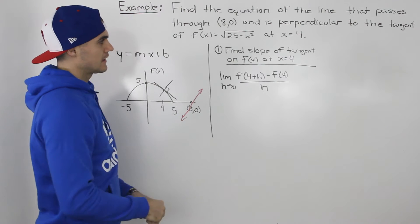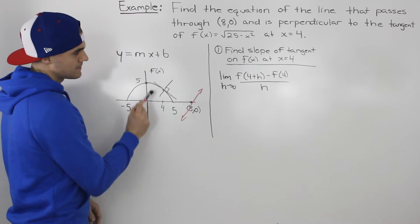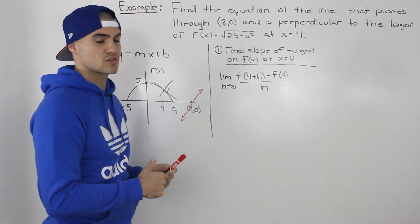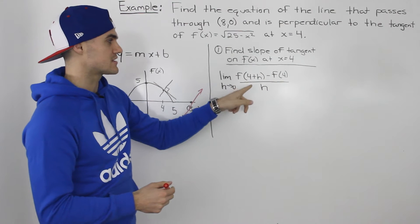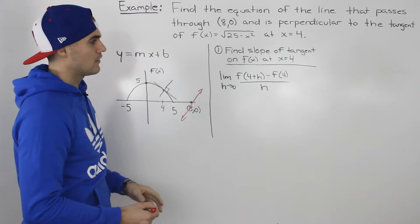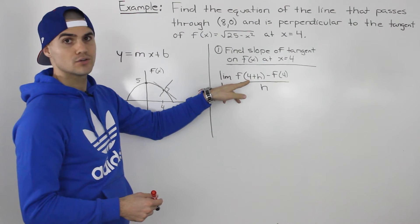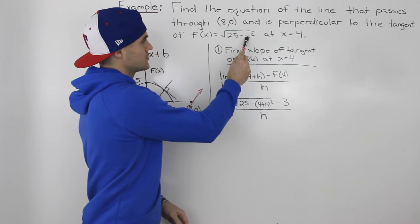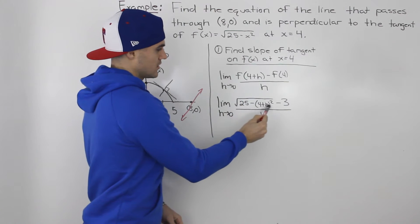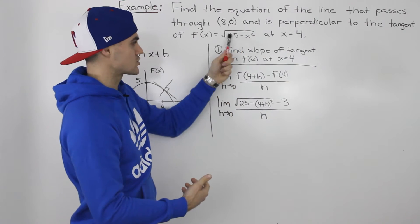So the first step to find the equation of this line is to find the slope of the tangent on this function at an x value of 4. We're going to do it at a specific value. I'm going to put 4 right away instead of a general a value. So plugging 4 plus h into the x value for the function, we get the square root of 25 minus (4 + h) squared. This represents f(4 + h) minus f(4). If we plug in 4 for x, we get 25 minus 16, which is 9, and the square root of 9 is 3. This is all over h.